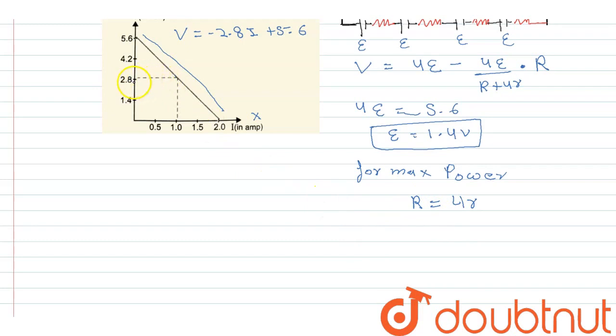We are given that when voltage is 2.8 volts, then current is 1A. So we substitute in this equation: 2.8 equals 4 into 1.4 minus 1 into R. From here, the value of R comes out to be 2.8 ohms.